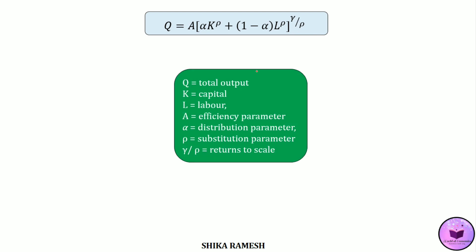Here, Q represents the total output, K is the capital, L is labour, A represents the efficiency parameter, alpha is the distribution parameter, rho is the substitution parameter, and gamma by rho represents the returns to scale.